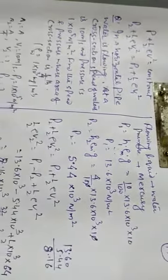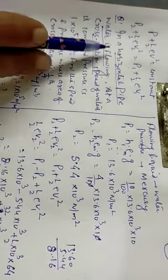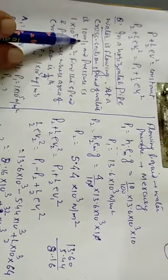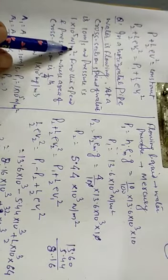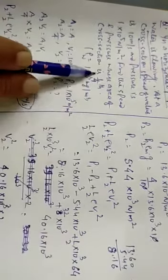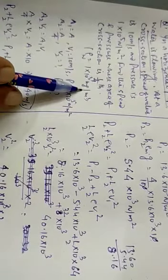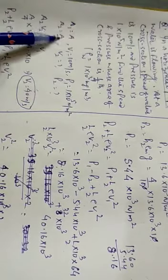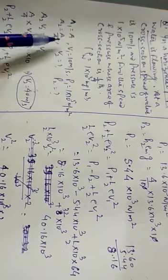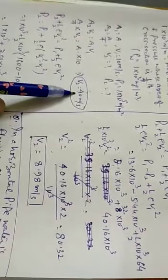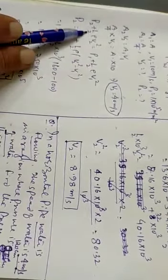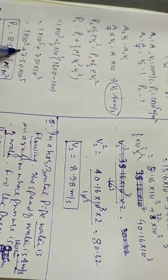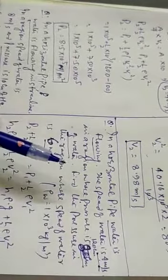Let us understand the numericals. Horizontal pipe, water is flowing. At a cross section, the speed of water is 10 meters per second. Find the speed and pressure where area of cross section is one fourth. What is the idea? A1 area is given, V1 is given. A2 is given, V2 we need to find. We don't know the continuity equation. A1V1 equals A2V2. Then horizontal pipe. We will do the calculation.